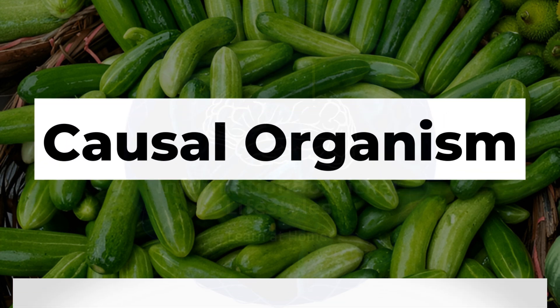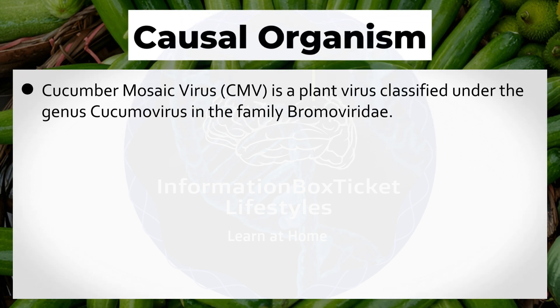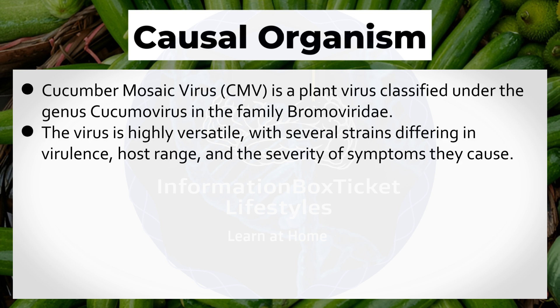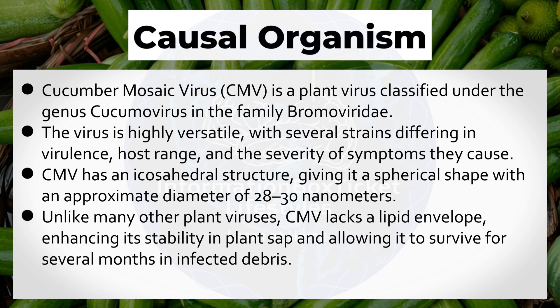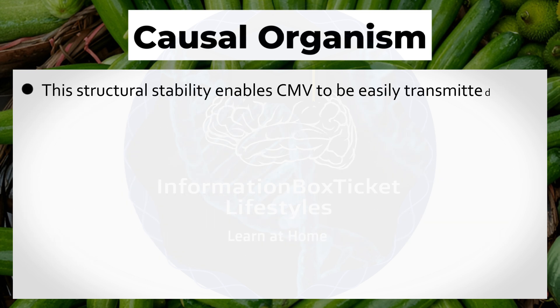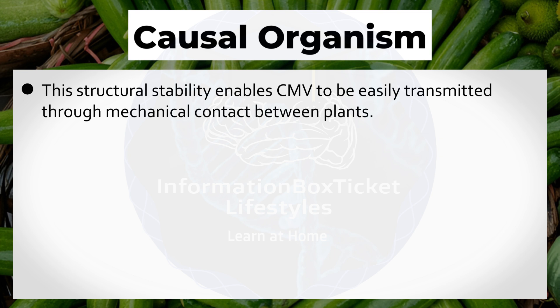Cucumber Mosaic Virus is classified under the genus Cucumovirus in the family Bromoviridae. The virus is highly versatile, with several strains differing in virulence, host range, and the severity of symptoms they cause. CMV has an icosahedral structure, giving it a spherical shape with an approximate diameter of 28 to 30 nanometers. Unlike many other plant viruses, CMV lacks a lipid envelope, enhancing its stability in plant sap and allowing it to survive for several months in infected debris. This structural stability enables CMV to be easily transmitted through mechanical contact between plants.